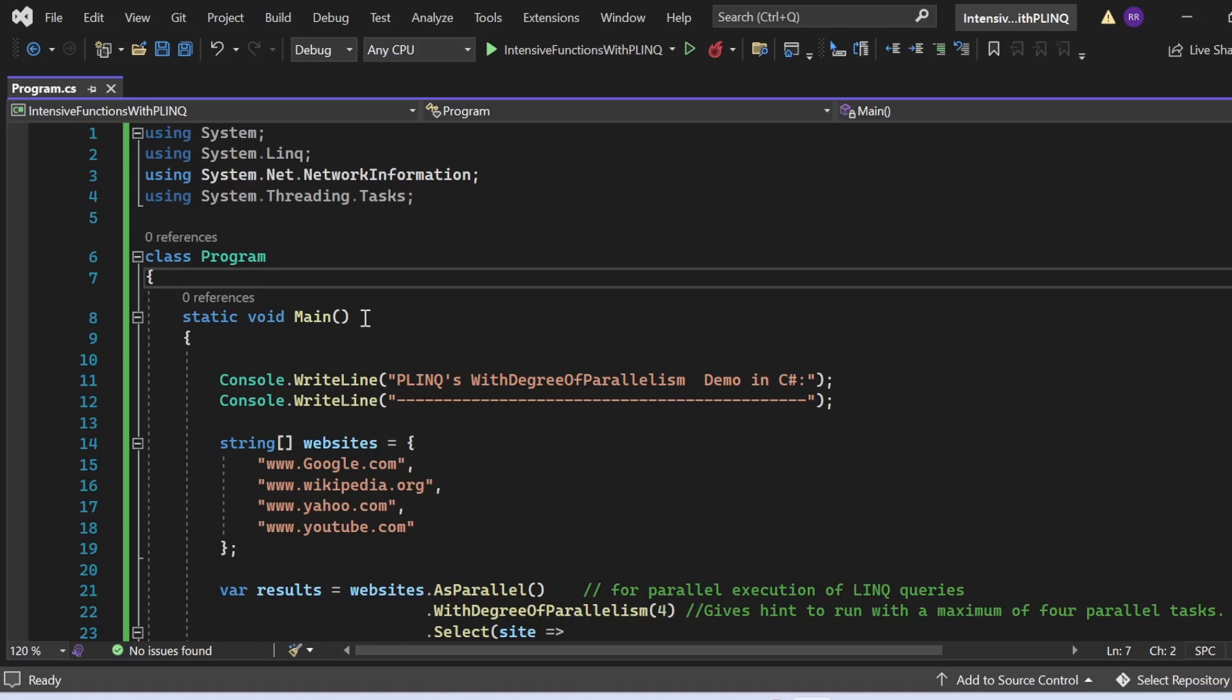Then there is a class named Program that has a Main method which is the entry point of this application. Here, first I have written console.WriteLine statement to print 'PLINQ's WithDegreeOfParallelism Demo in C#' into the console. Then I created a string array where I have mentioned the URLs of the websites to ping.